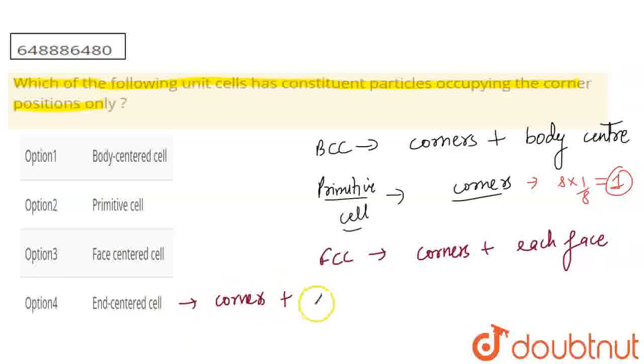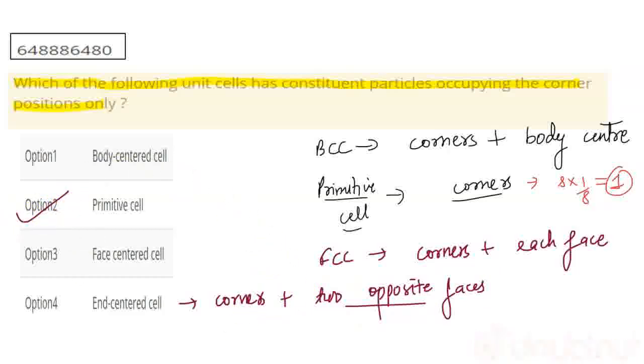We have corners. And what happens in the corners? What happens in the opposite cell? Two opposite faces. Two opposite faces in the center. So we don't have corners. So option 2 will correct. Thank you very much.